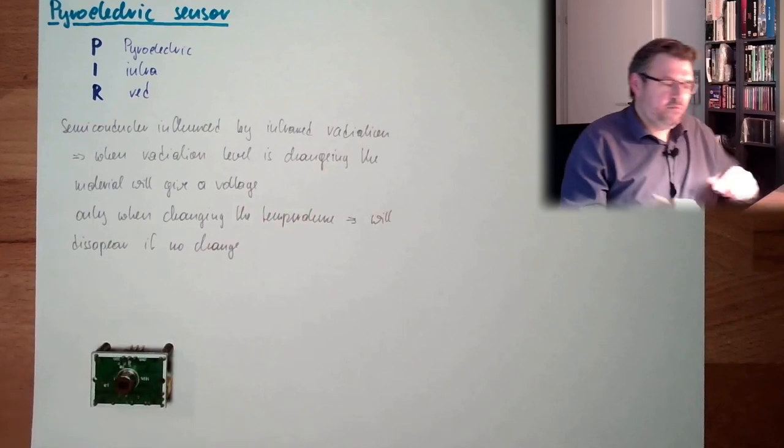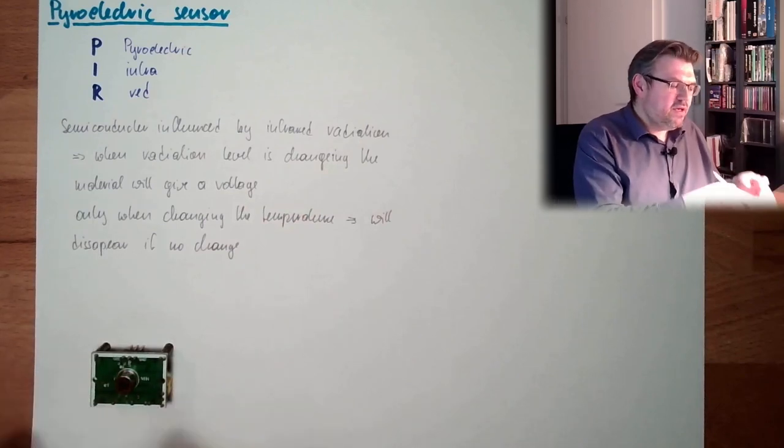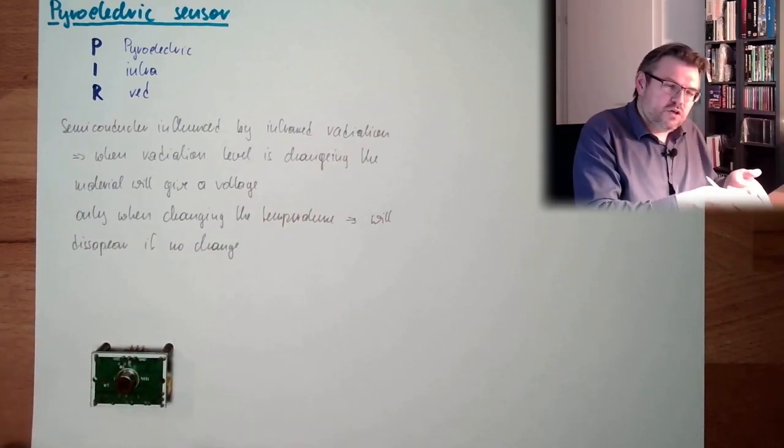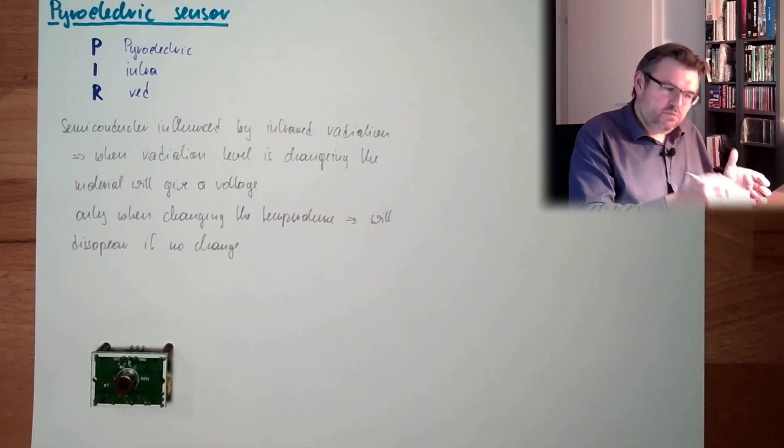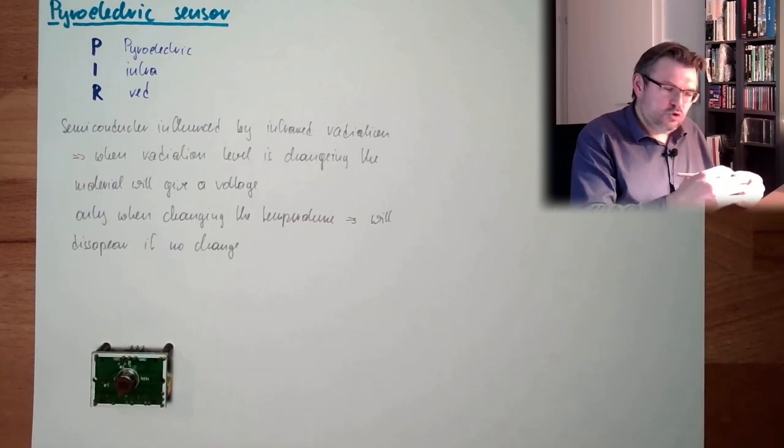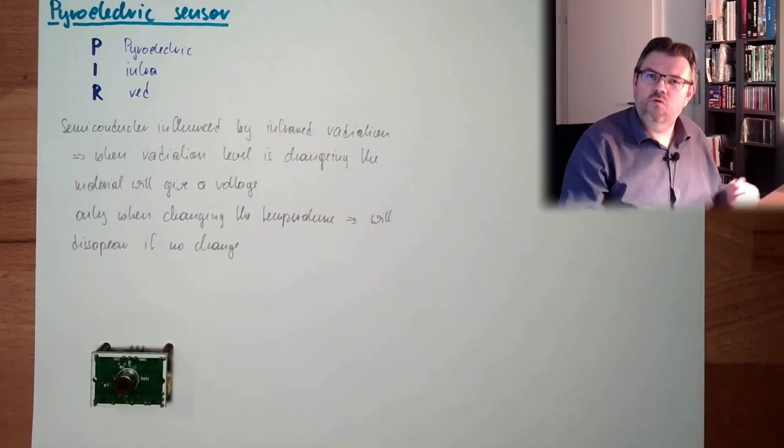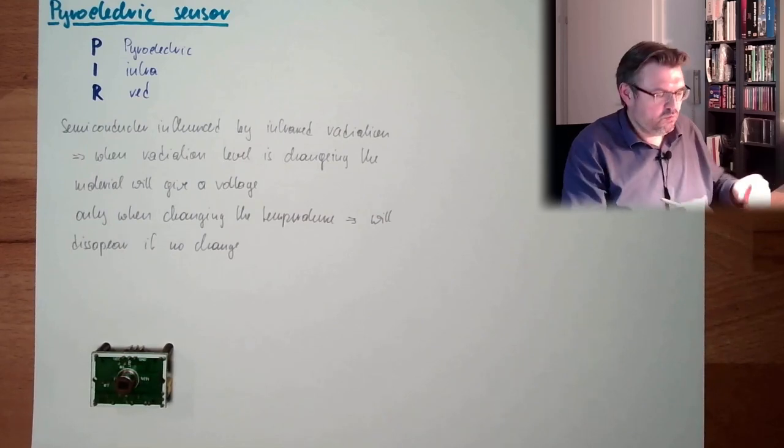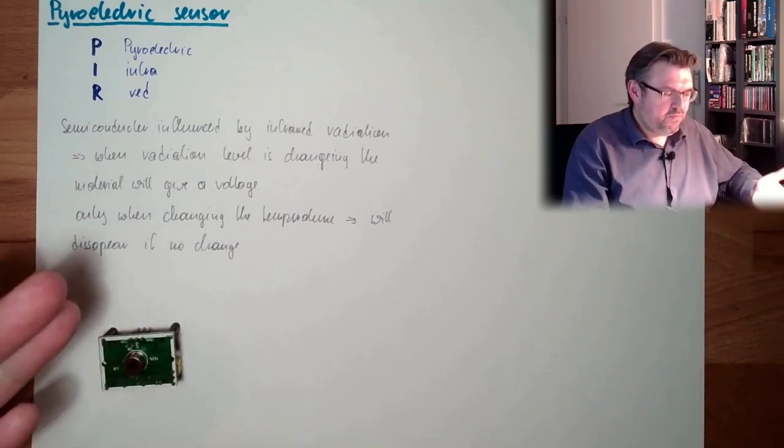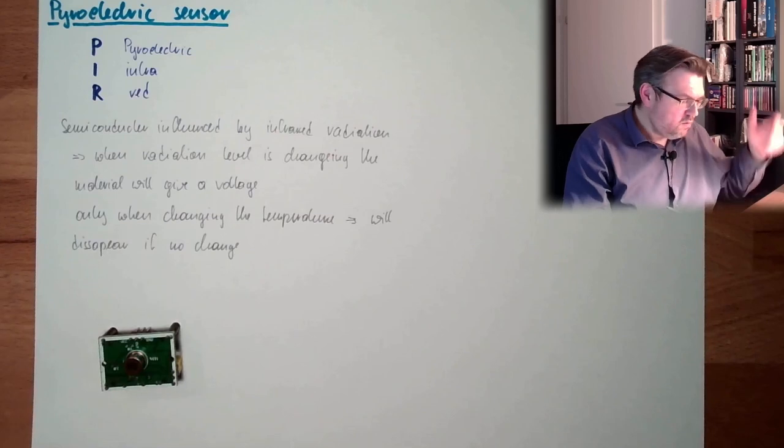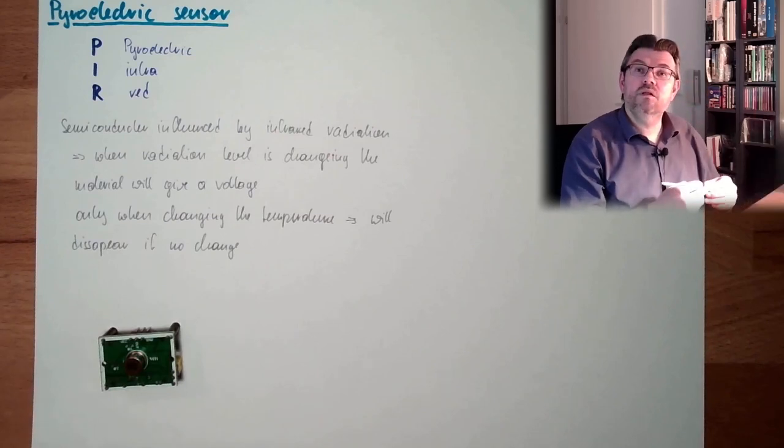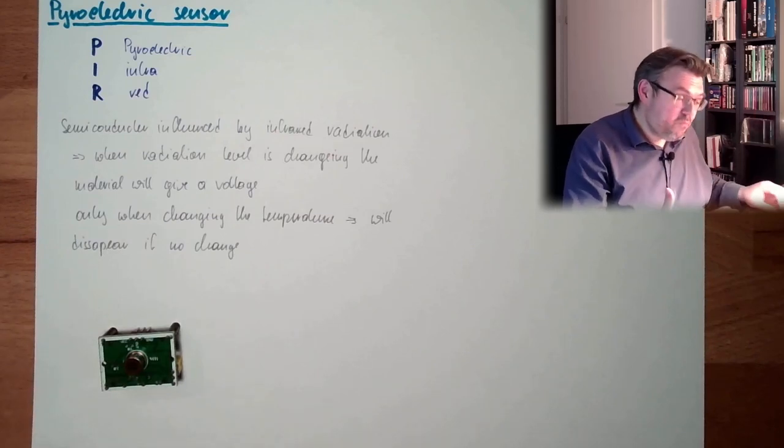So temperature is changing. This is reacting, giving voltage. And if the temperature then stops changing, stays the same, this voltage will disappear over time. And then this is normal. And when it changes again, it will react again with voltage.